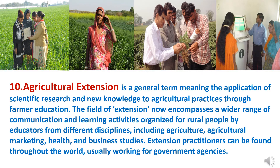The next branch is agriculture extension. Agriculture extension is a general term meaning the application of scientific research and new knowledge to agriculture practices through farmer education. The field of extension now encompasses a wider range of communication and learning activities organized for rural people by educators from different disciplines including agriculture, agriculture marketing, health and business studies. Extension practitioners can be found throughout the world, usually working for government agencies.